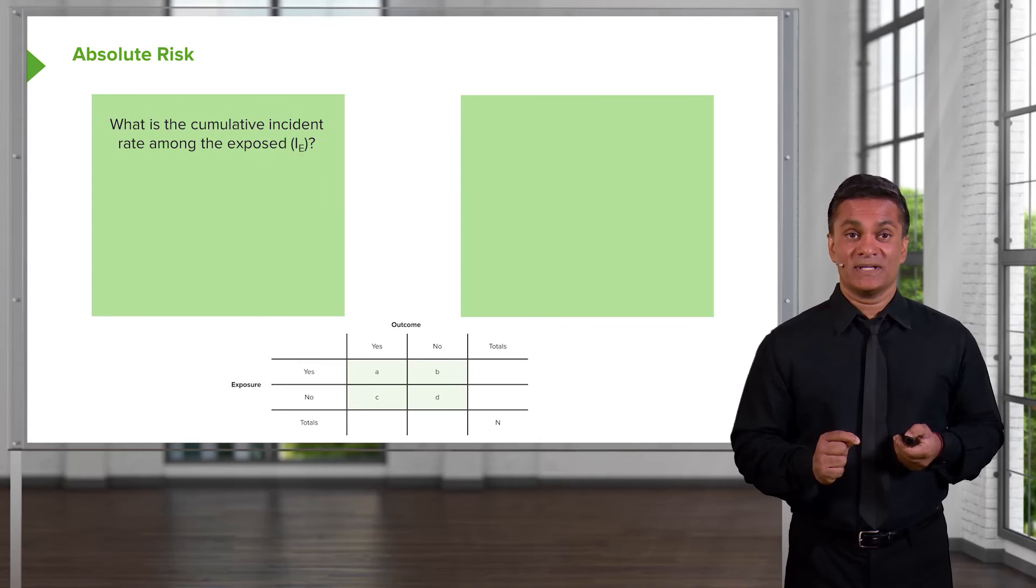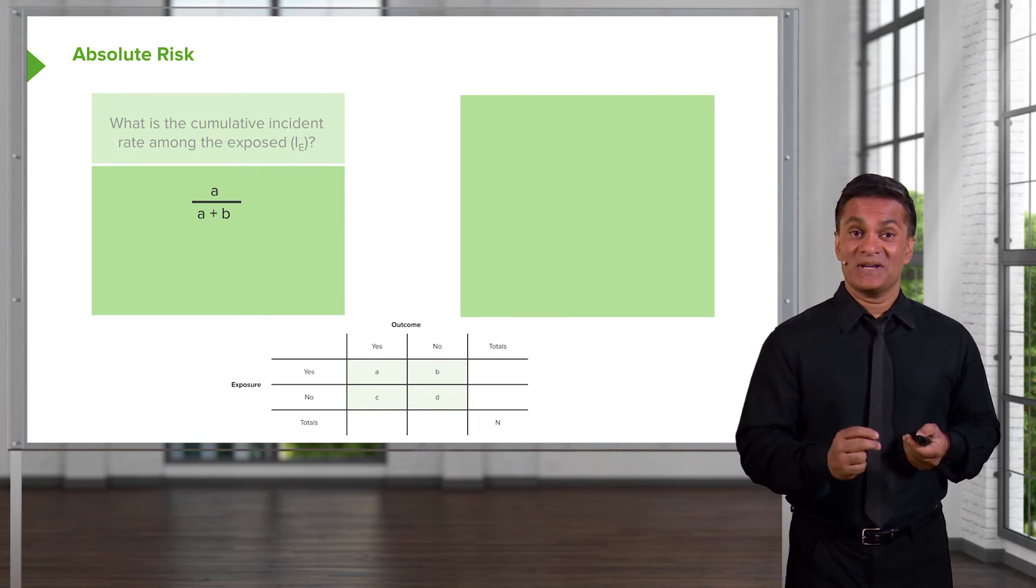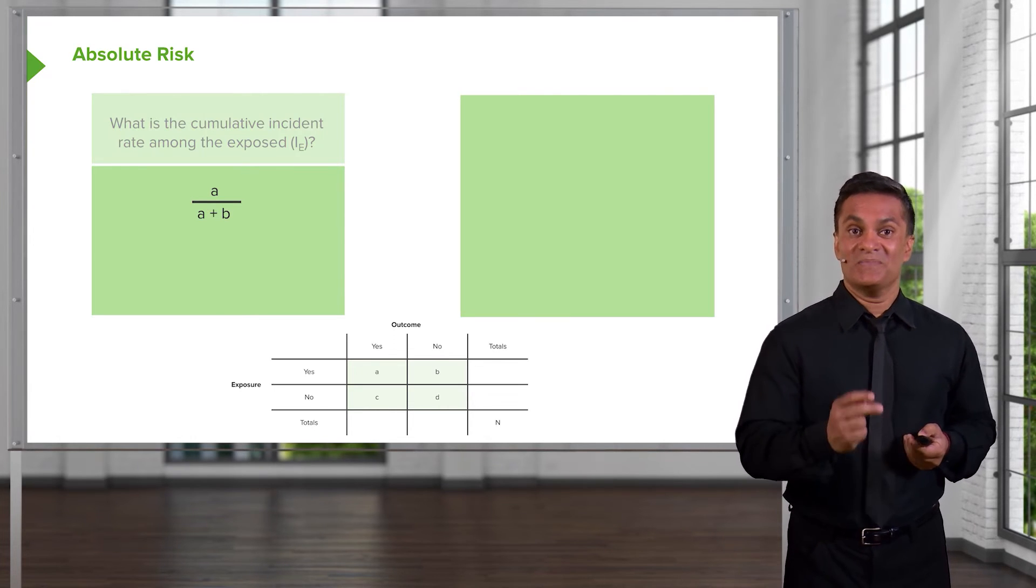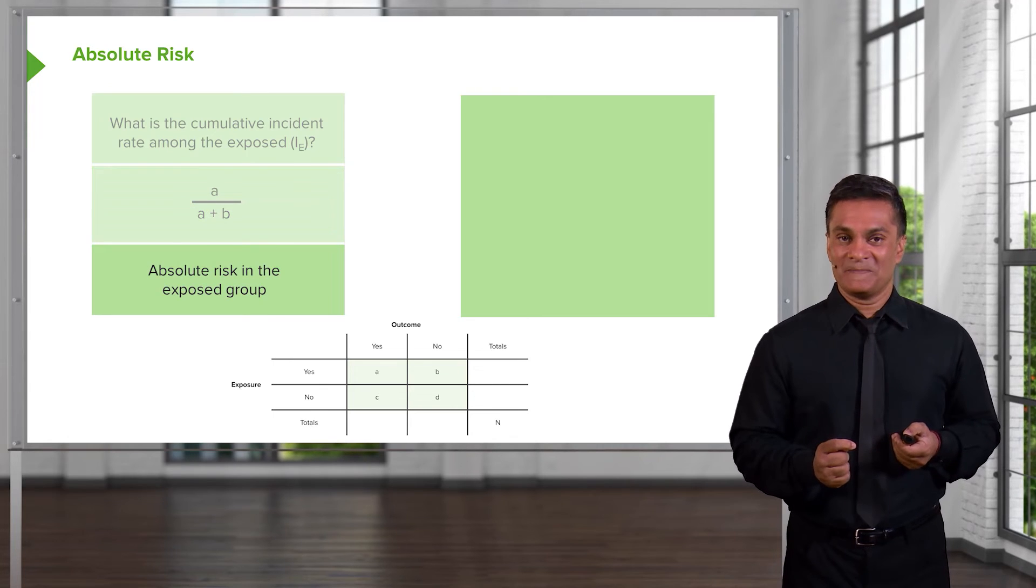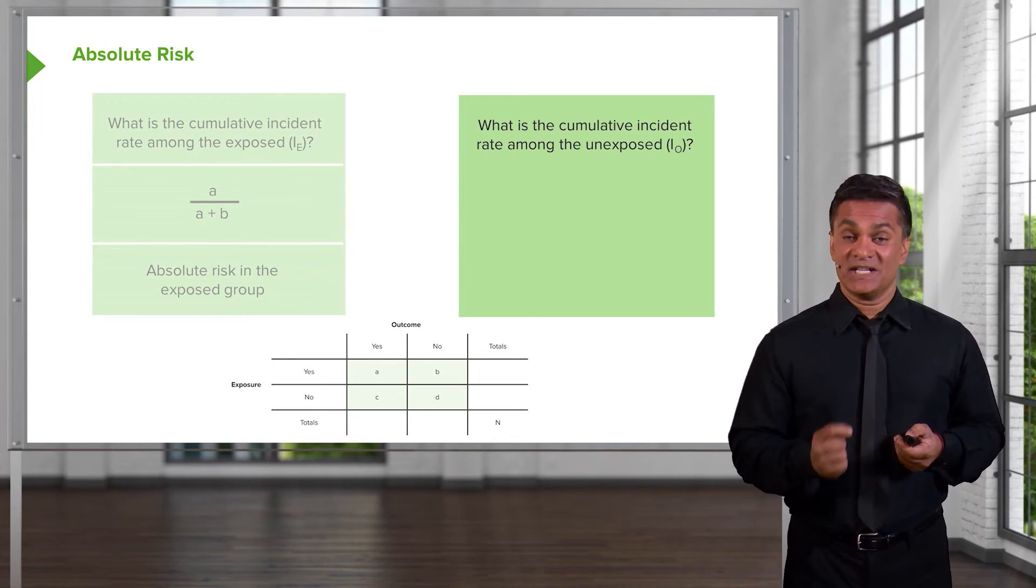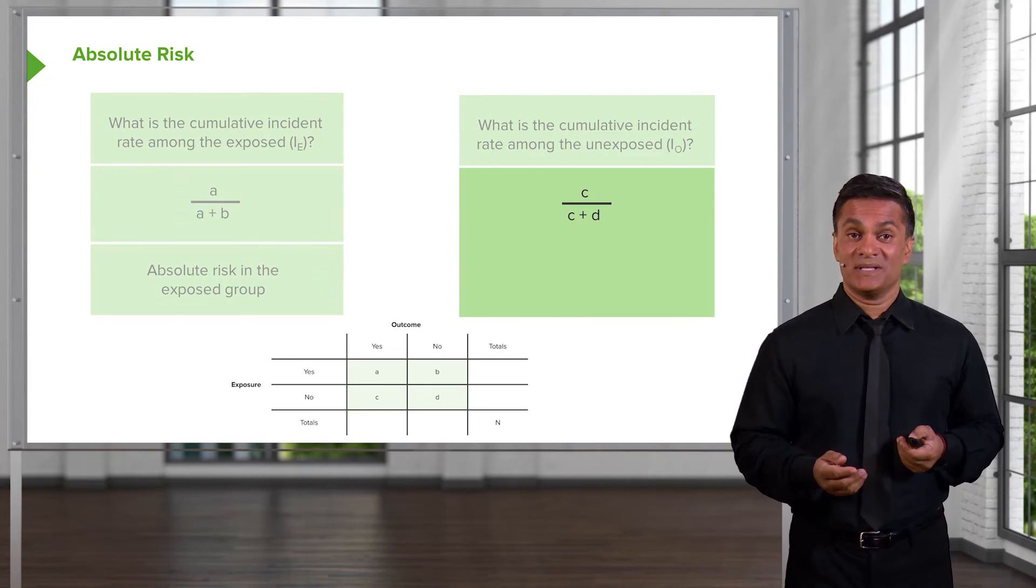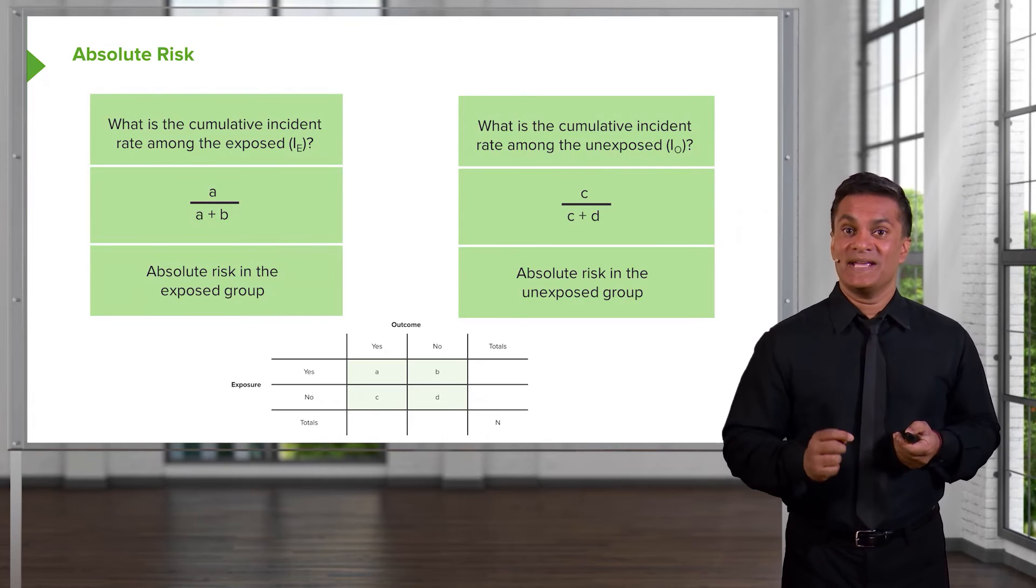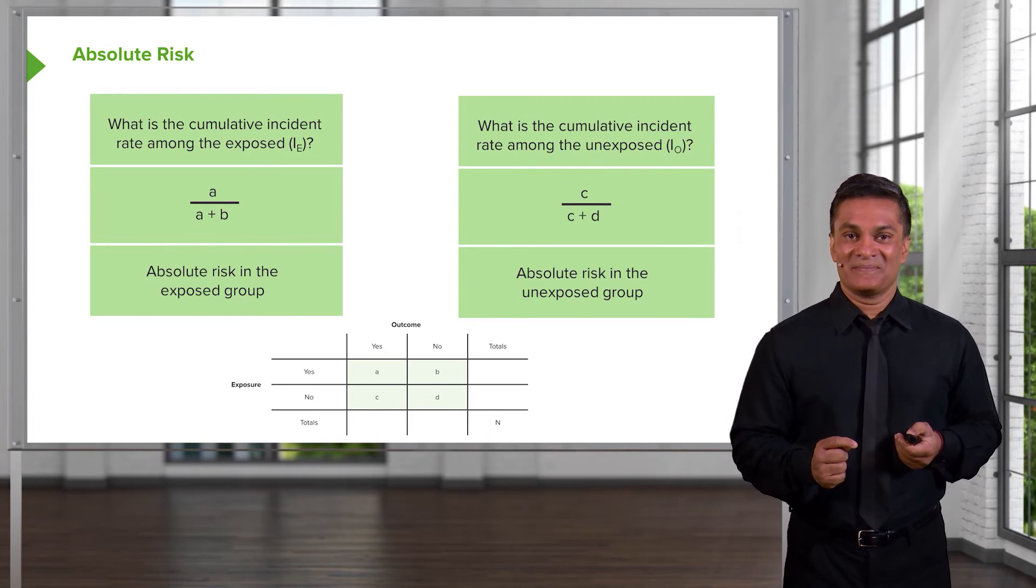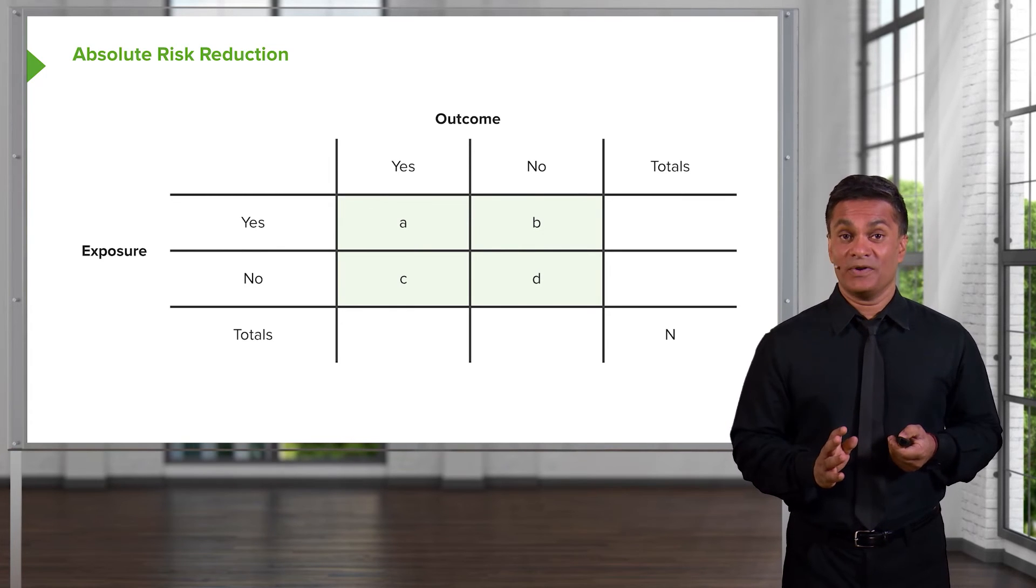I'm summarizing it one more time. The cumulative incidence rate amongst the exposed is A over A plus B. Again, that's the risk of getting the outcome if you smoked or had the behavior. Absolute risk in the exposed group. The cumulative incidence rate in the unexposed group is the other side of the argument, C over C plus D. In other words, the risk of getting the outcome, lung cancer, if you didn't smoke. Back to our table again, you see where those numbers come from.